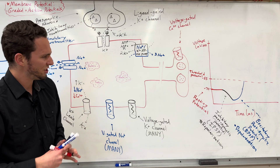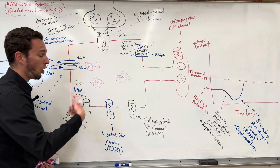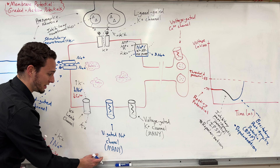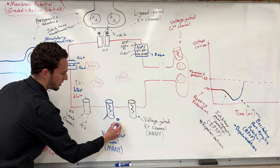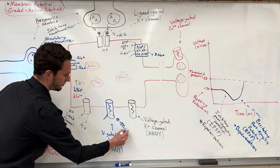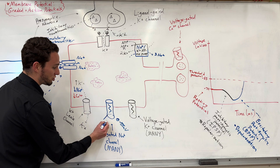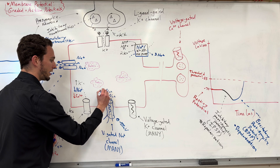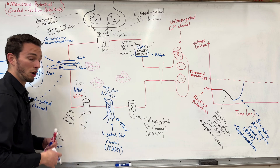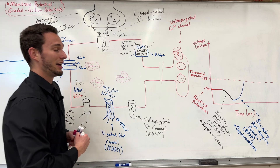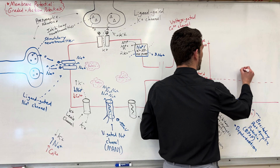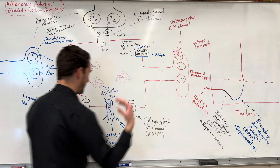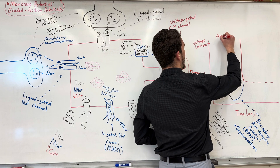When the voltage hits negative 55, we can open up voltage-gated sodium channels. At that threshold, these channels open up, and because you have a lot of them, sodium rushes in like crazy. A lot of sodium flying into the cell causes the cell's voltage to shoot up like a rocket. This is called an action potential — when we hit threshold, voltage-gated sodium channels open and we fire an action potential.